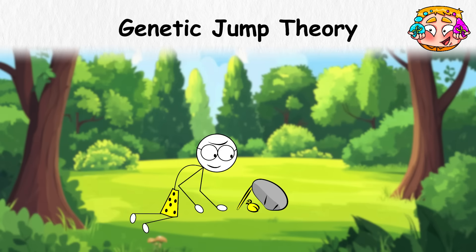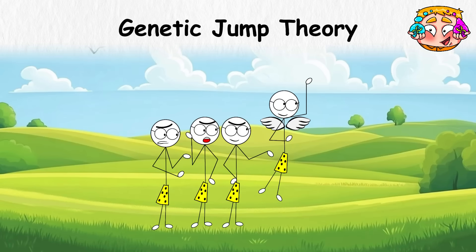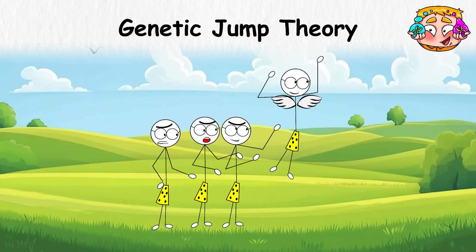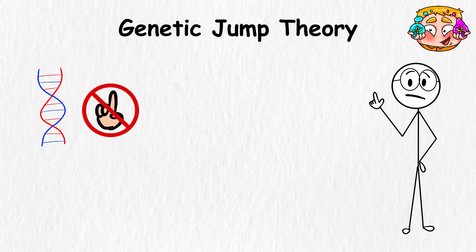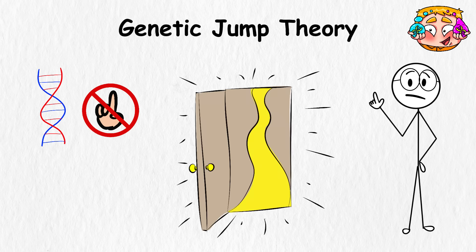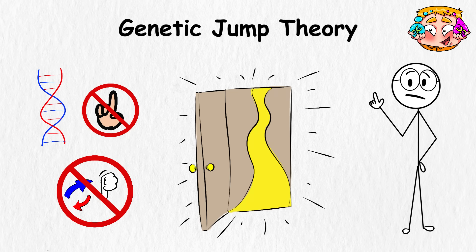Better teamwork, smarter hunting, stories that stuck. Over time, those advantages would grow, and the others would fall behind. The idea isn't that we became human from one gene alone, but this theory says a tiny shift, in the right spot, at the right time, could have opened the door to everything that followed. Change didn't creep in, it showed up suddenly, like something had been waiting for the right moment.